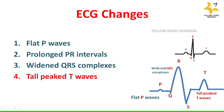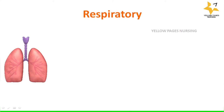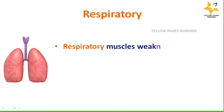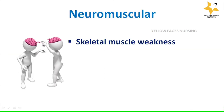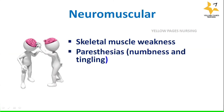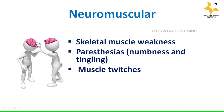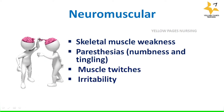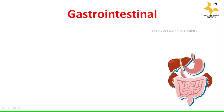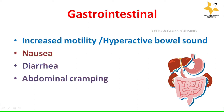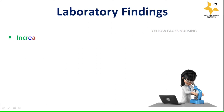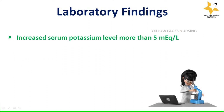Respiratory symptoms include respiratory muscle weakness. Neuromuscular changes include skeletal muscle weakness, paresthesias (numbness and tingling sensation), muscle twitches, and irritability. Gastrointestinal symptoms include increased motility, hyperactive bowel sounds, nausea, diarrhea, and abdominal cramping.